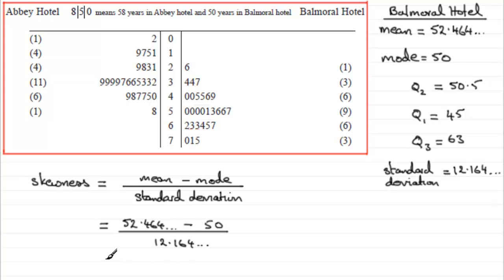And if you work that out, what you're going to get is 0.20258. And if you round that, say, to three decimal places, then you end up with 0.203 to 3 decimal places. Just squeeze that in there.